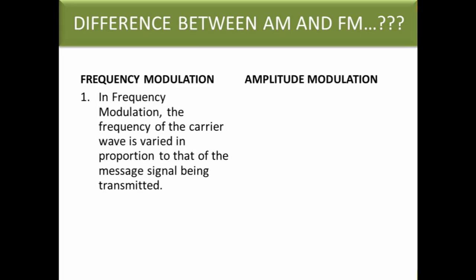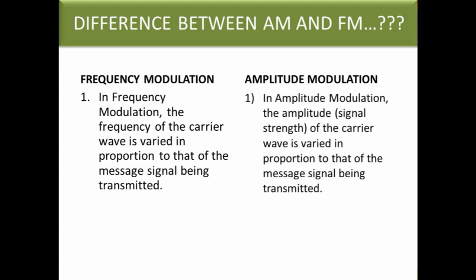In frequency modulation, the frequency of the carrier wave is varied in proportion to that of the message signal being transmitted. In amplitude modulation, the amplitude of the carrier wave is varied in proportion to that of the message signal being transmitted.